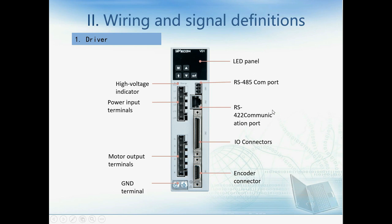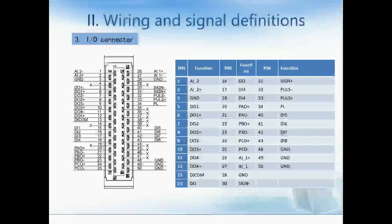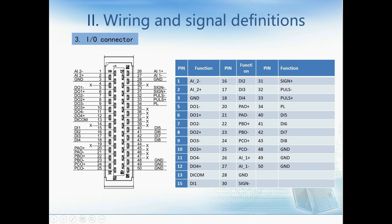This is the I/O connector, and this one is the encoder connector. Because it's a ready-made cable, we don't need to solder the pins ourselves — just make the connection. On the I/O connector, here we can see AI1 and AI2. AI1 and AI2 are for speed reference and torque reference. Both signals range from minus 10V to 10V.